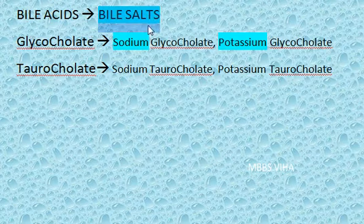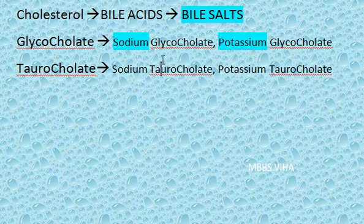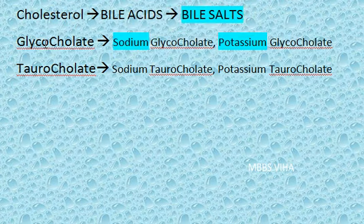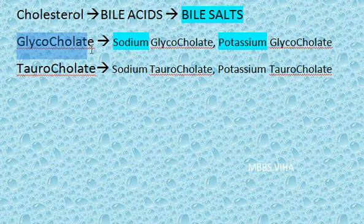Bile salts are a very important topic for university exams. Cholesterol gives bile acids, and when bile acids become salts of sodium or potassium, you get bile salts. Bile acids include compounds like cholic acid. On conjugation with glycine or taurine, they give glycocholate or taurocholate — cholate being cholic acid. So glycocholic acid is a conjugated bile acid.